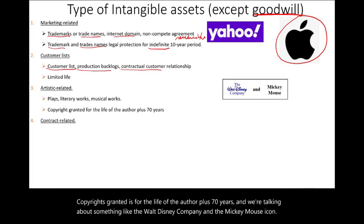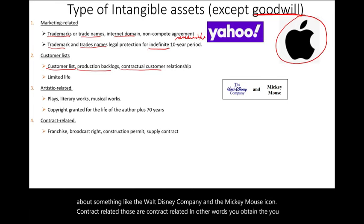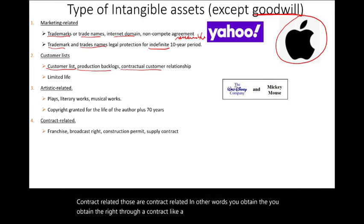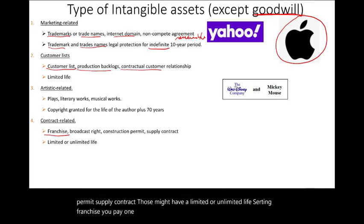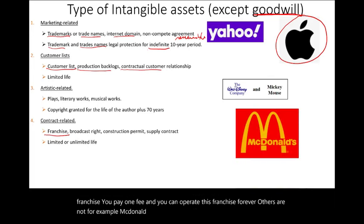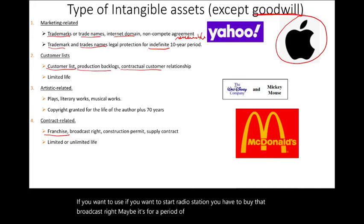Contract-related intangible assets are rights you obtain through a contract, like a franchise, broadcast right, construction permit, or supply contract. These may have a limited or unlimited life. Certain franchises let you pay one fee and operate forever; others do not — for example, McDonald's versus Subway. Broadcast rights, such as starting a radio station, may be for a period of time or unlimited. Construction permits are similar — contract-related intangibles can be limited or unlimited.